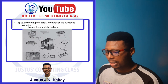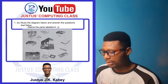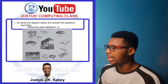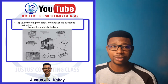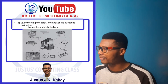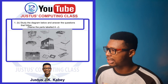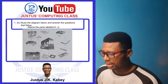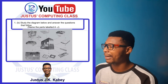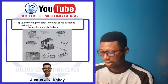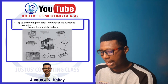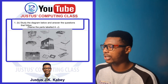Part label D is the hard disk or disk drive. Part label E is the power supply unit. Part label F is the motherboard. Part label G is the central processing unit.